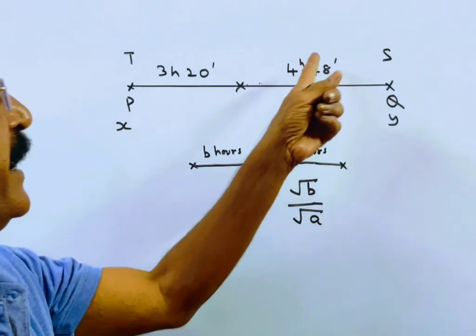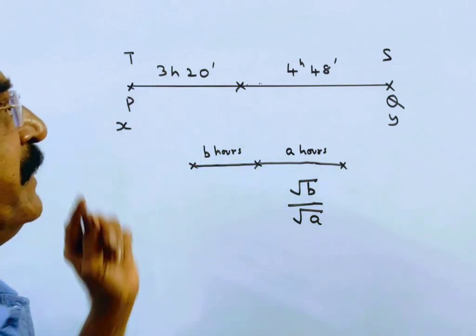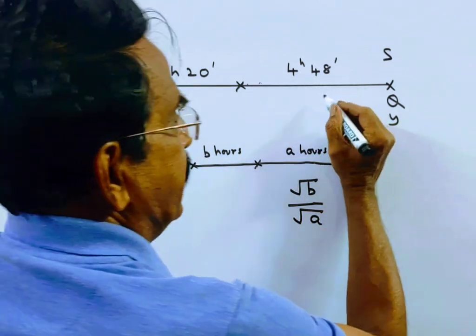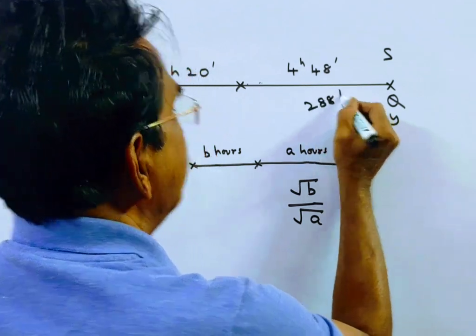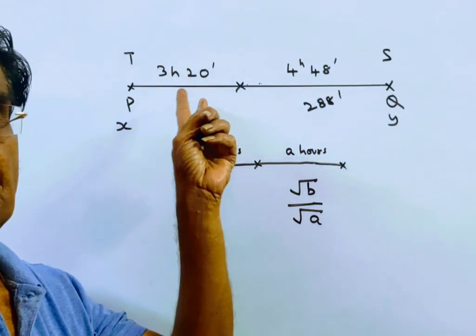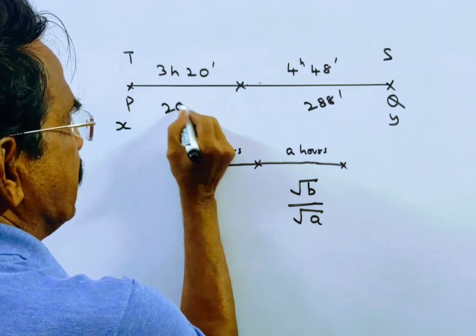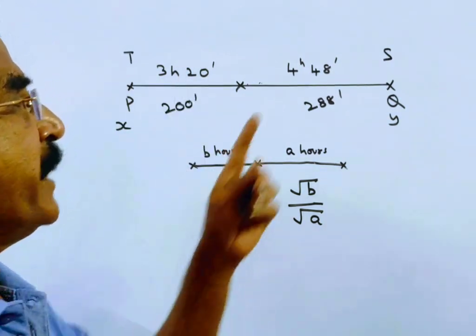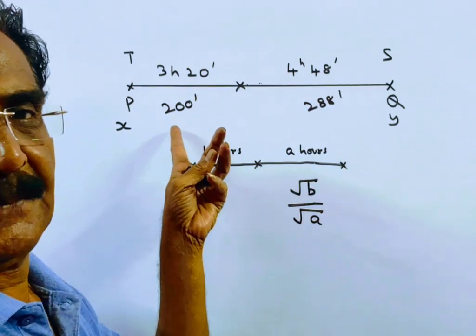Here, A is 4 hours 48 minutes, B is 3 hours 20 minutes. 4 hours 48 minutes means 4 times 60 is 240 plus 48, 288 minutes. Now A is 288 minutes, B is 200 minutes.